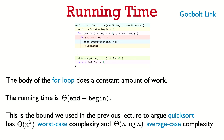This is what we used in the last video — this is what we need to argue that quicksort has worst-case time complexity Θ(n²) and average-case time complexity Θ(n log n).